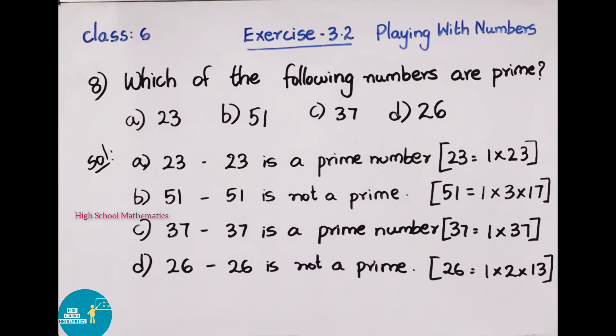Next, 51. 51 is not a prime. 51 can be written as 1 into 3 into 17. 3 times 17 is 51. So 51 has 1 and itself, 1 and 51, but also 3 and 17 as factors. It has more than 2 factors. So it is not a prime number.